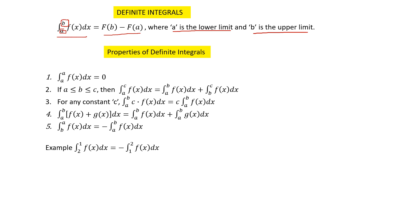Property number one tells you that whenever the lower limit and upper limit are both the same, the function always gives you zero as the answer. For example, if I have 2 as both limits with any function, the final answer will be zero.